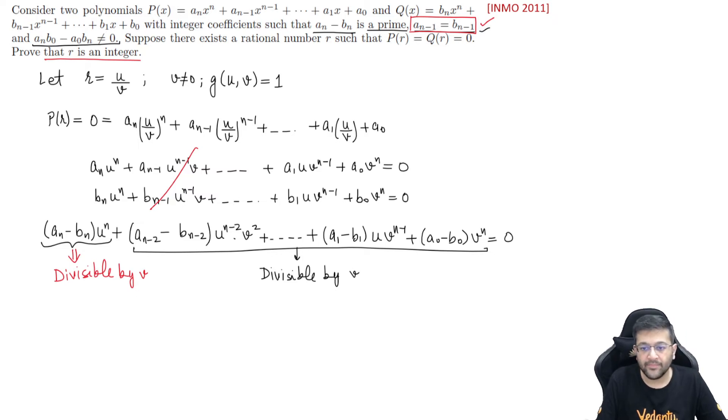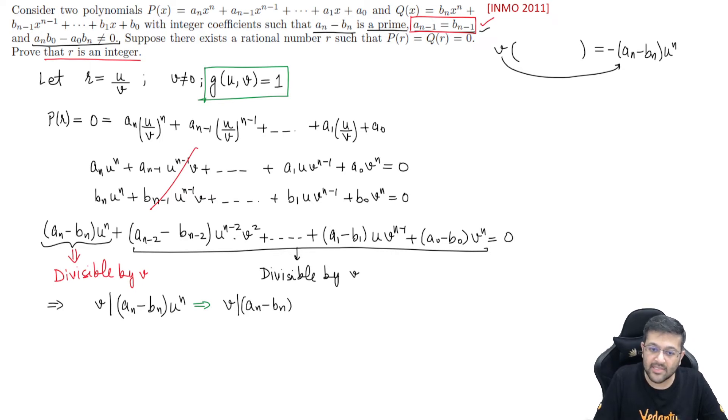You can write v times some terms equals minus (a_n - b_n) times u^n. This implies v must divide (a_n - b_n) u^n. But since GCD of u and v is 1, they are coprime, so v will not divide u^n. Therefore v must divide a_n - b_n. And a_n - b_n is a prime number given in the question. This is an interesting thing.